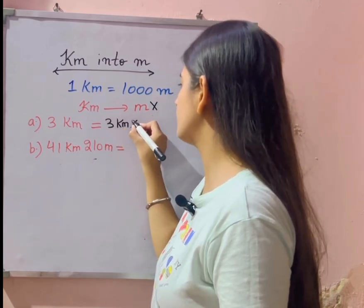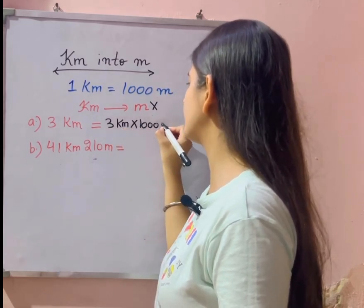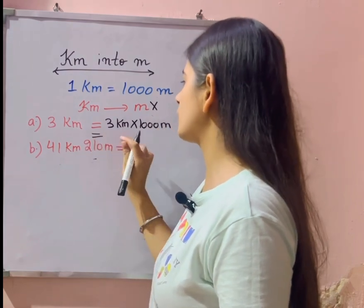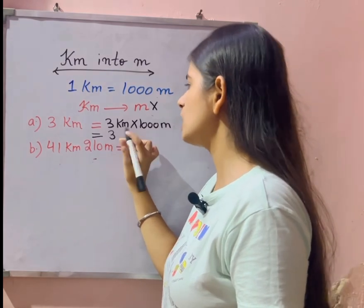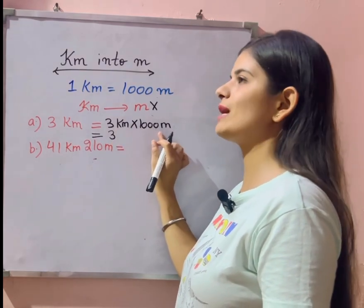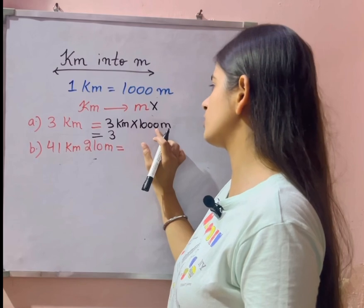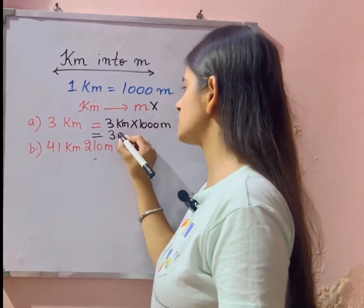kilometer multiply by thousand meter is equal to. Now multiply both the numbers: three into one thousand is equal to three. Three ones are three, aur jitni hamari zeros hain utni likh dengi. Kitni zeros hamari? One, two, three. Three zeros.